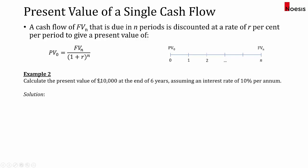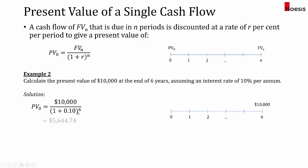Example 2: calculate the present value of $10,000 at the end of six years assuming an interest rate of 10% per annum. On the timeline we have $10,000 at the end of year 6. To find the value at time 0, we take 10,000 divided by (1 + 0.1) to the power of 6, which gives us $5,645. This could also be interpreted as: you can invest $5,645 today at 10% per year and you will get $10,000 at the end of six years.